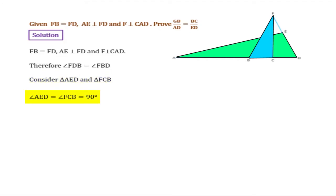In these two triangles, we can see that there are angles which are equal to 90 degrees. So automatically these two angles are equal: angle AED and angle FCB.